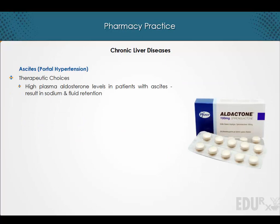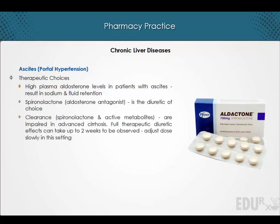High plasma aldosterone levels in patients with ascites results in sodium and fluid retention, and therefore spironolactone is the diuretic of choice. It should be noted that the clearance of spironolactone and its active metabolites are impaired in advanced cirrhosis. Therefore, full therapeutic diuretic effects can take up to 2 weeks to be observed, and it is important to adjust the dose slowly in this setting.